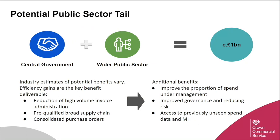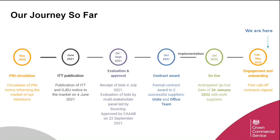There are a range of high-level benefits central to the solution, including reduction of high-volume invoice administration, gaining access to a pre-qualified and broad supply chain, and the ability to consolidate purchase orders. Additional benefits include improving the proportion of spend under management, improving governance and reducing risk within the organisation, and gaining access to previously unseen spend data and management information. Having two suppliers means a call-off process is required, though direct award is also available, and we're pleased with the number of early adopters currently working through the award process.